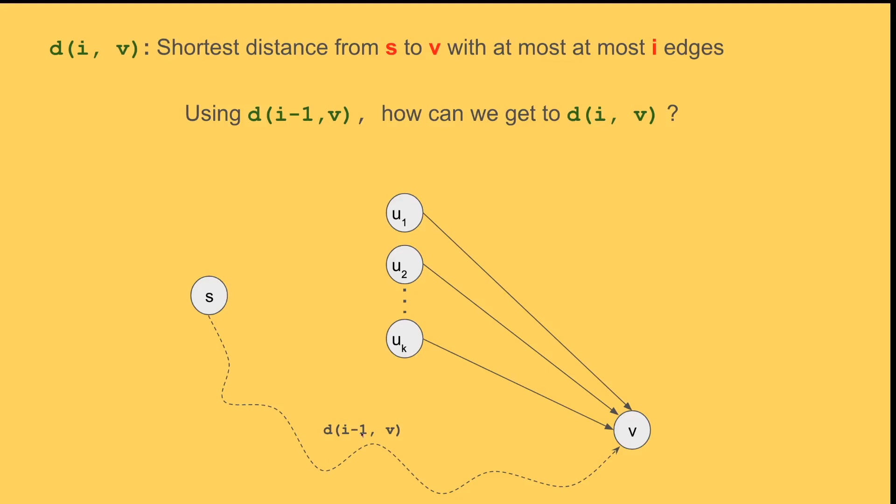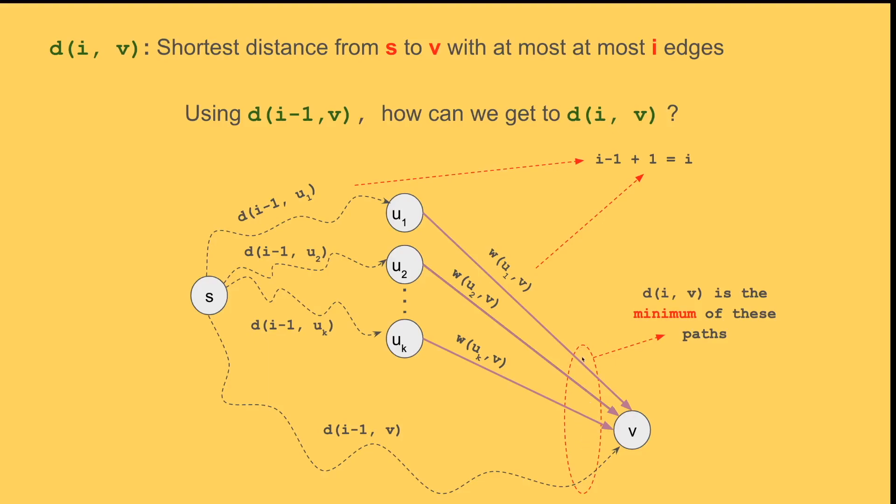Now if I give you one edge more, you have to spend i minus one edges to go to one of the incoming nodes or predecessor nodes of node v, and then spend the last edge on the edge between that predecessor and v. So that would be i minus one plus one. Finally we have spent i edges. So you either go from this path or go from this path or go from this path, and then finally we find the minimum value of all these possible paths, and that would be our minimum shortest path using i edges.